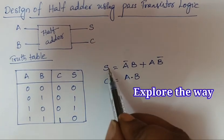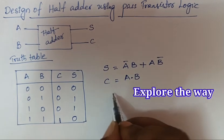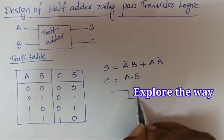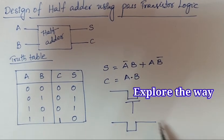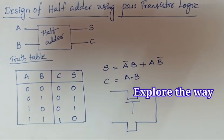Coming to the sum output, it consists of two terms. So here we are taking two pass transistors. In between we have plus, so these two are connected like this.